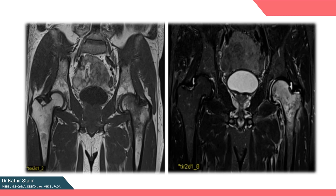X-ray changes are usually delayed compared to clinical signs, so the better investigation is MRI. MRI shows marrow edema of the femoral head and neck. On the T1-weighted image, you can notice decreased signal intensity and loss of fatty marrow. On the T2-weighted image, you will see high signal intensity indicating marrow edema and also joint effusion.